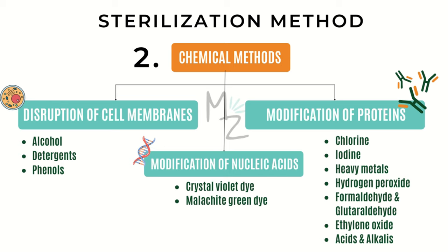Heavy metals: mercury and silver have the greatest antibacterial activity among heavy metals and are the most widely used in medicine. They act by binding to sulfhydryl groups, thereby blocking enzymatic activity. Hydrogen peroxide is used as an antiseptic to clean wounds; its effectiveness is limited by the organism's ability to produce catalase, an enzyme that degrades hydrogen peroxide.